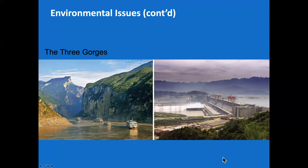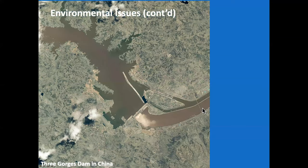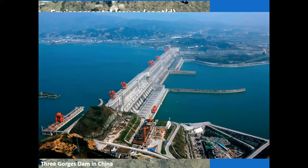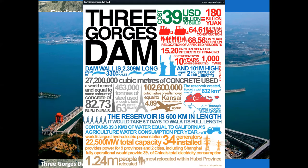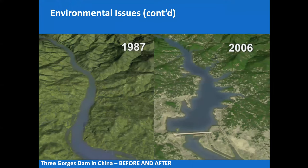This is what the Three Gorges Dam looks like — it's the biggest dam in the world. It generates quite a bit of electric capacity in addition to reservoir and flood control. It roughly generates about 22,500 megawatts, or 22.5 gigawatts of capacity. In 1987 the river flowed naturally; as of 2006 when the dam was completed, it created a large lake and reservoir on the upstream side.